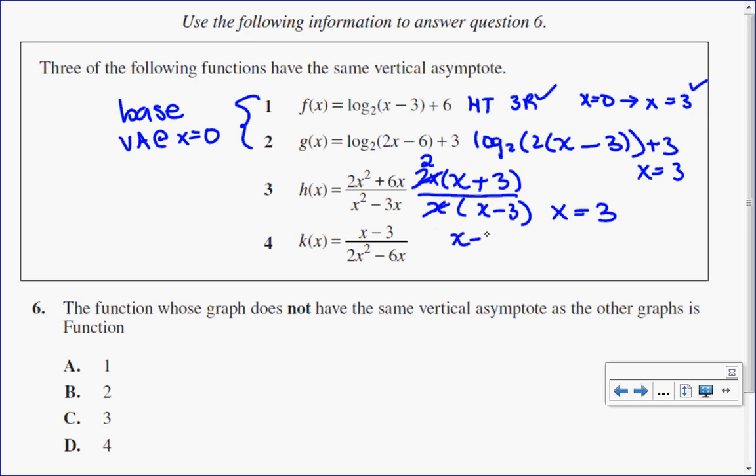I have x minus 3 all over, greatest common factor of 2x. 2x squared divided by 2x is x, take away 6x divided by 2x is 3. Now in this case here, it looks like it might be a vertical asymptote, but in fact those cancel. x equal to 3 is a point of discontinuity.